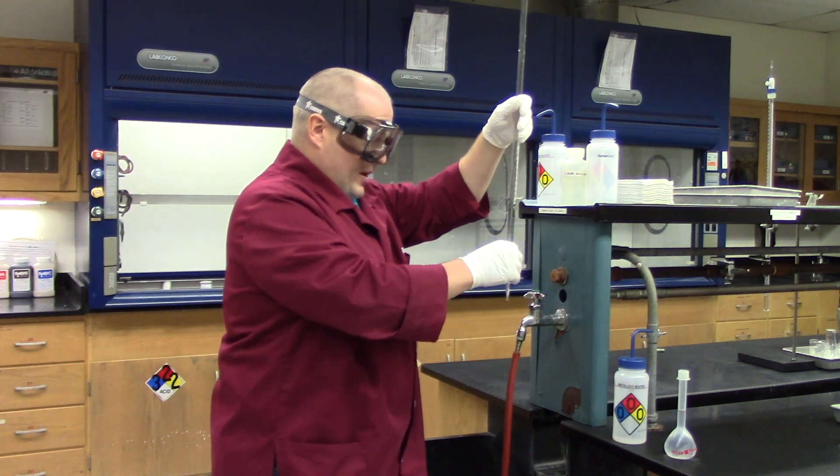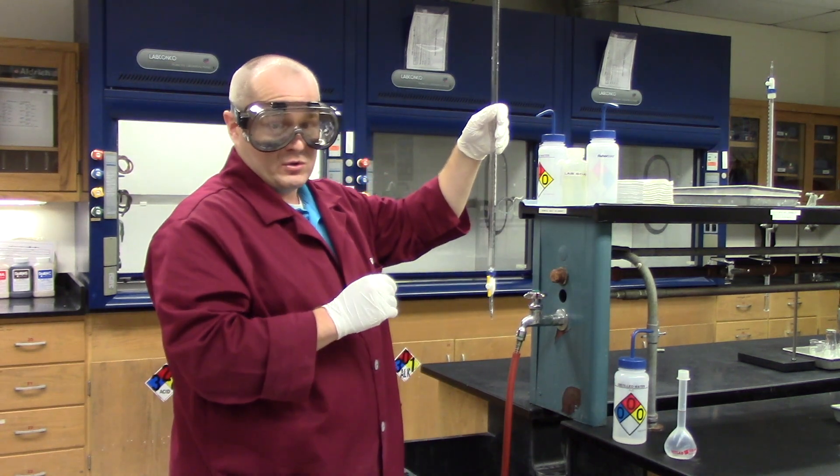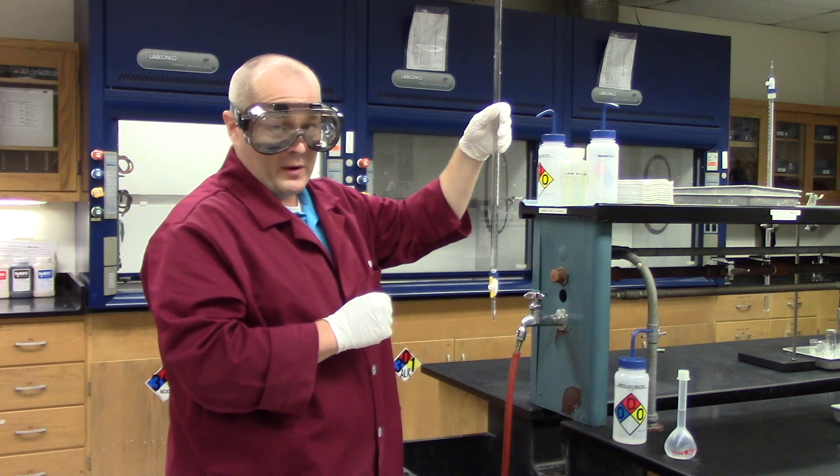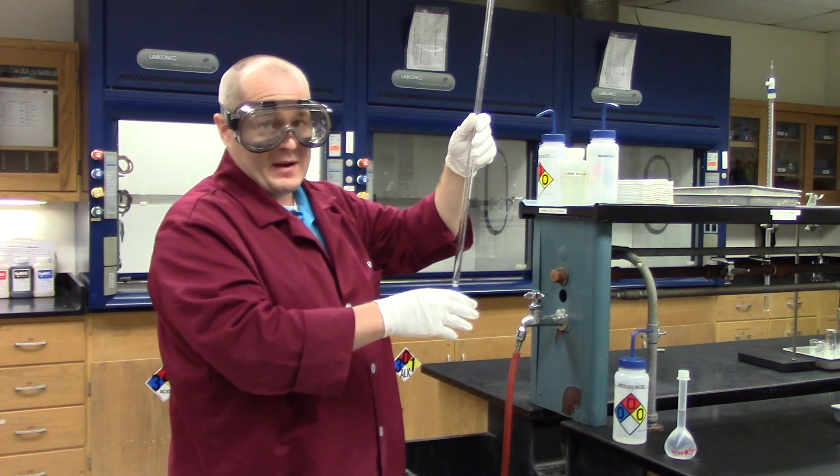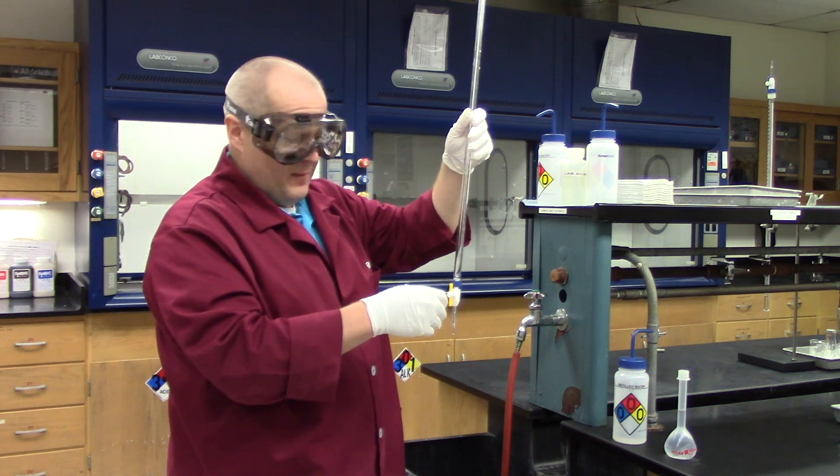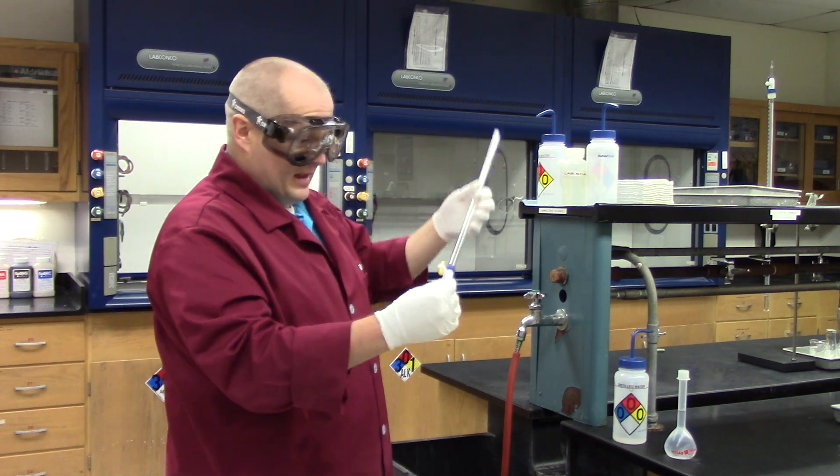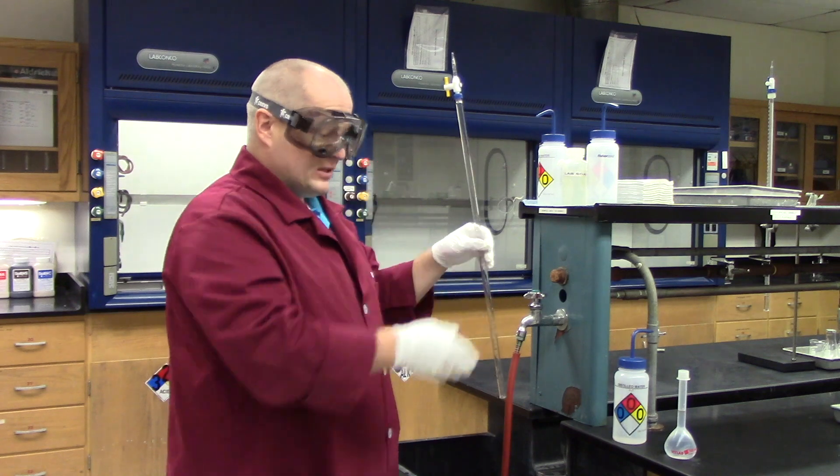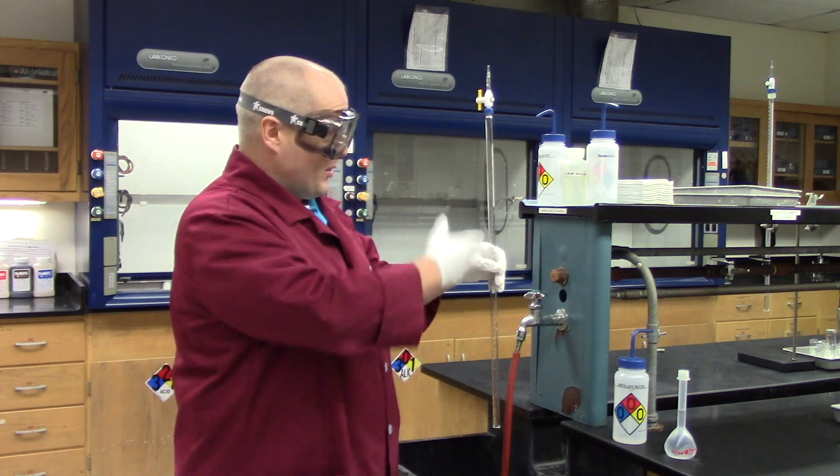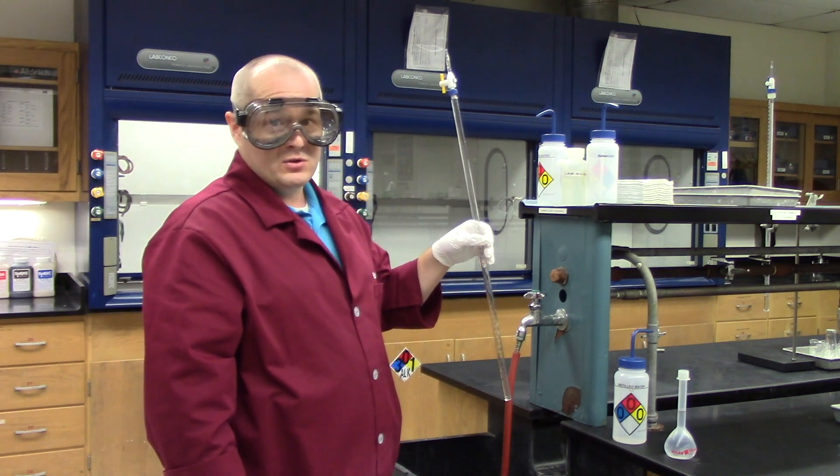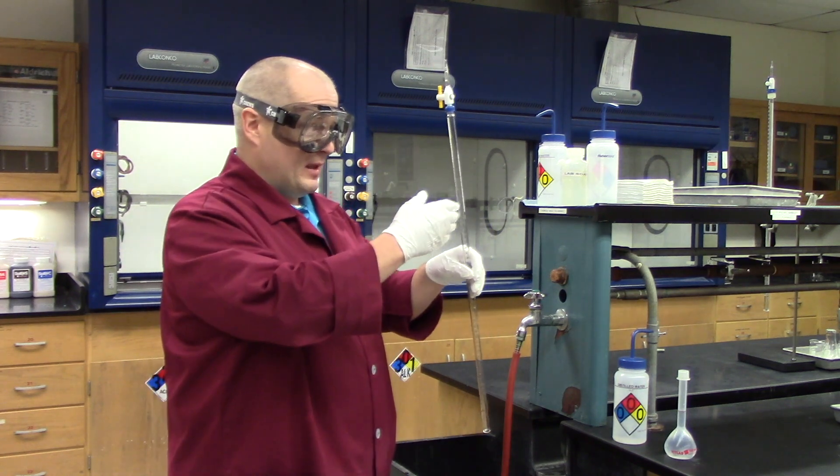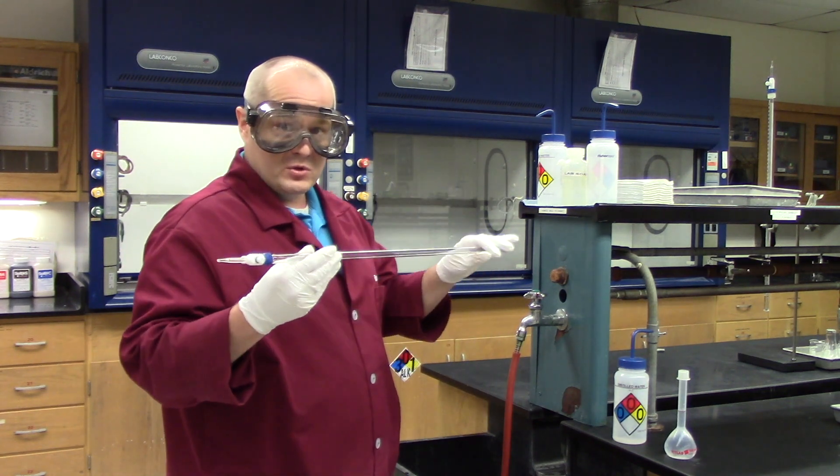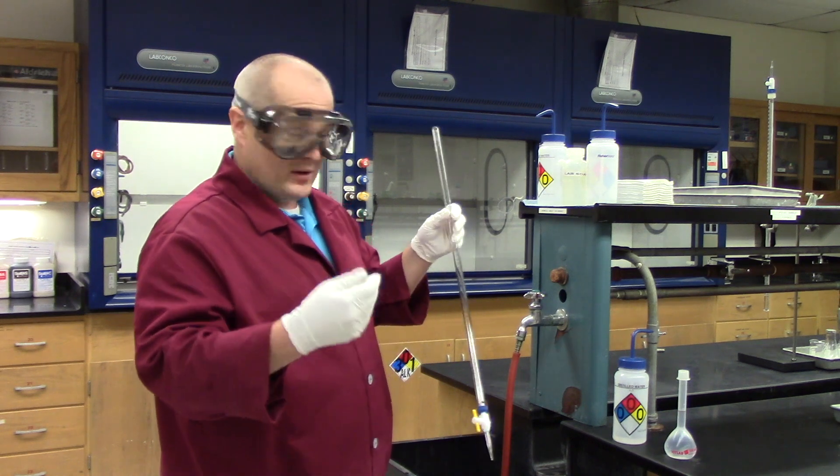Now, the solution that we want to put in the burette is a water solution. It is your antacid dissolved in water. But we don't want this water in here. We don't want to spend all day waiting for it to dry, so what we can do is take a little bit of the antacid solution that we've created and put it in here and rinse it with the antacid solution a few times. It doesn't take more than a few mLs, and it will get the burette coated with the solution we want to use, so we can just go ahead and use it.